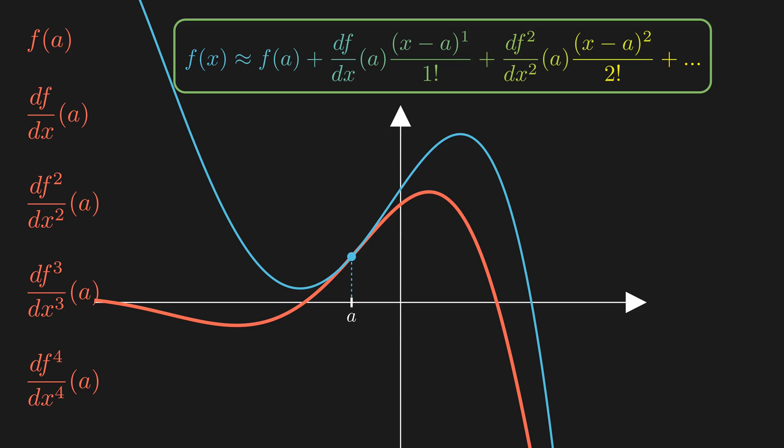Taylor series are used to convert complex functions, which appear in mathematics, computer science, physics and engineering, economics, and artificial intelligence, into approximate polynomial forms.